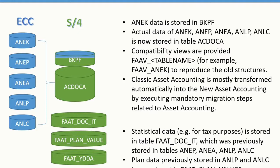There are also certain controlling tables involved. COBK is not changing; COEP is partially staying in COEP, but some of it is moving into ACDOCA, since ACDOCA also covers management accounting — cost elements and similar items go into ACDOCA. COSP and COSS, the two previous controlling tables, are completely moving into ACDOCA.